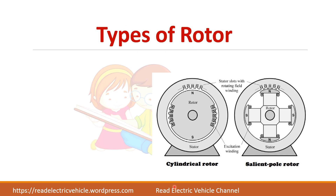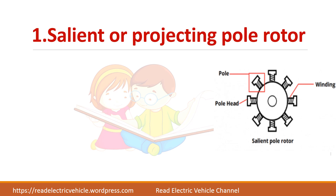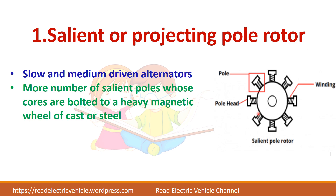There are two types of rotors: one is the salient pole rotor and the other is called a cylindrical rotor. Salient means projecting — you can see the poles are projecting outward. Depending upon the requirement, we can use the salient pole rotor or the cylindrical rotor. The salient pole rotor is used for slow and medium speed driven alternators, with projecting poles attached to a wheel-like structure.